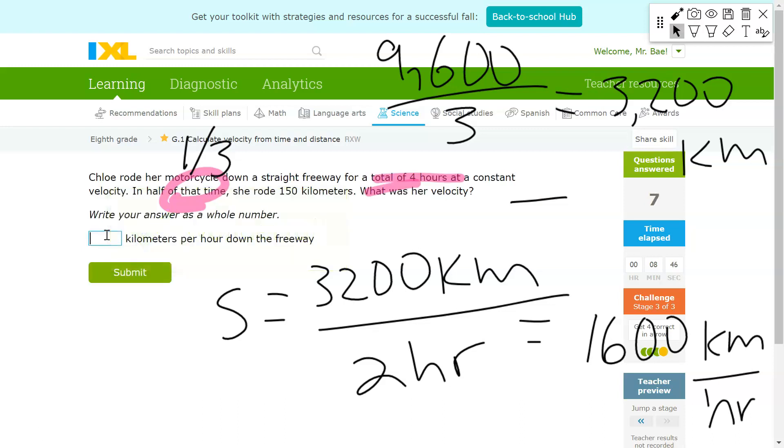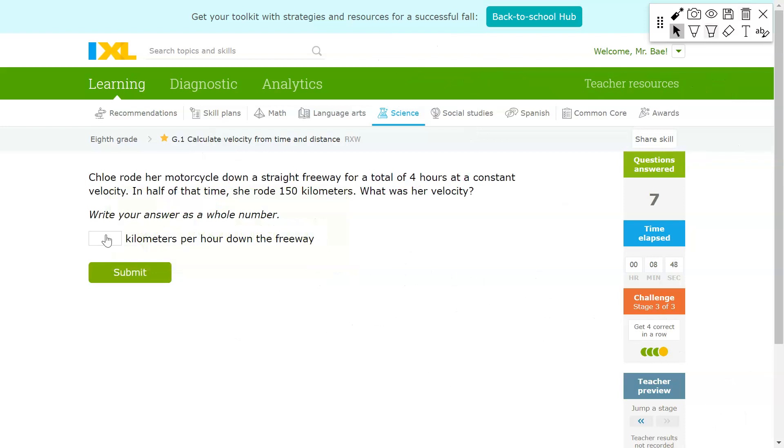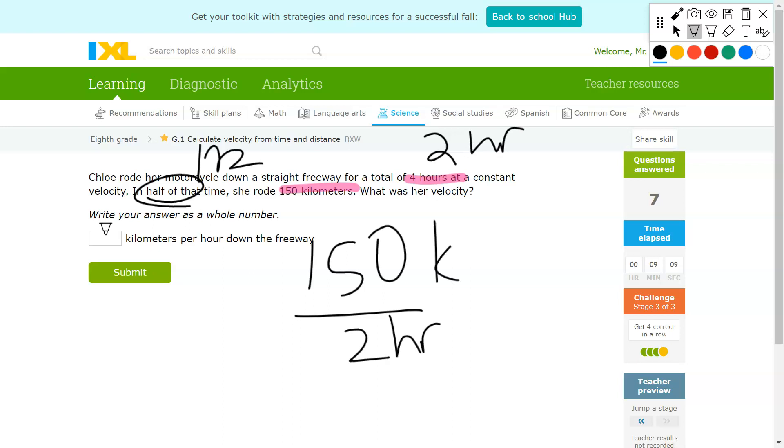And there you have it, guys. That's all you need to know in order to tackle this IXL. Hopefully this helped you out to figure out how to do that. I'm just going to do this last one quickly. 150 over 2 hours. That should get you 75.